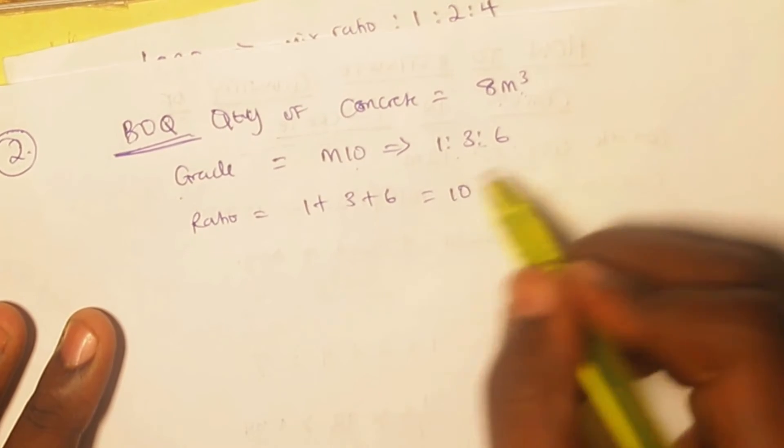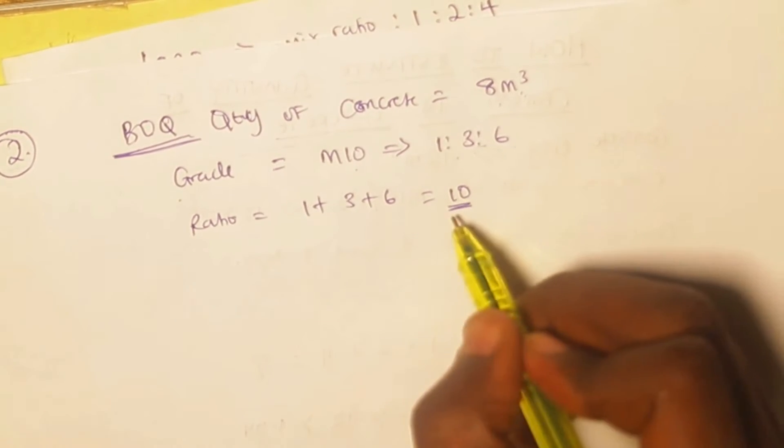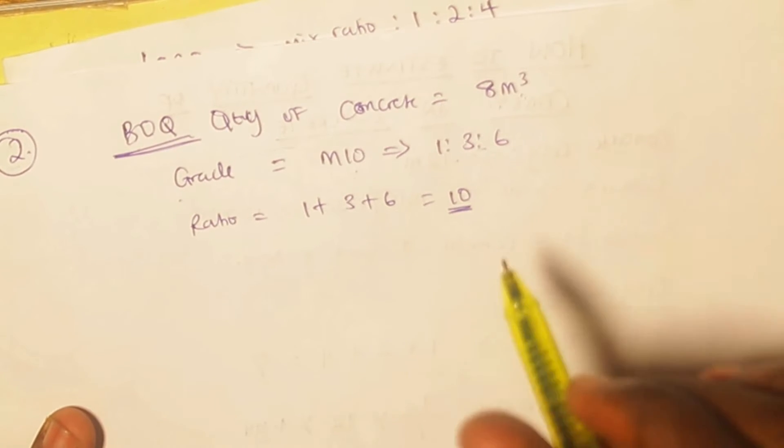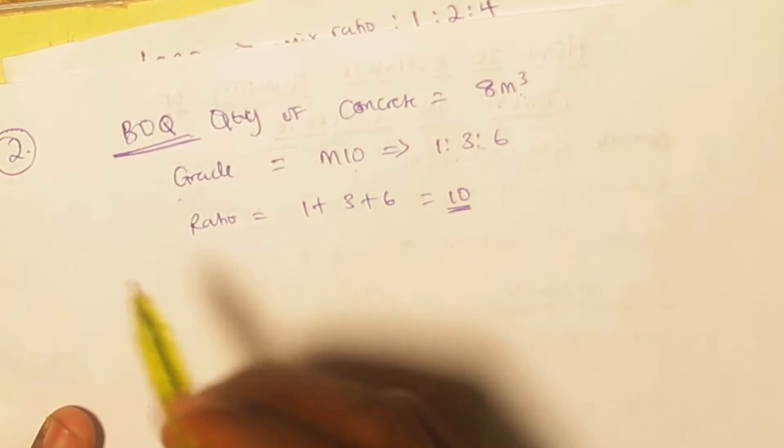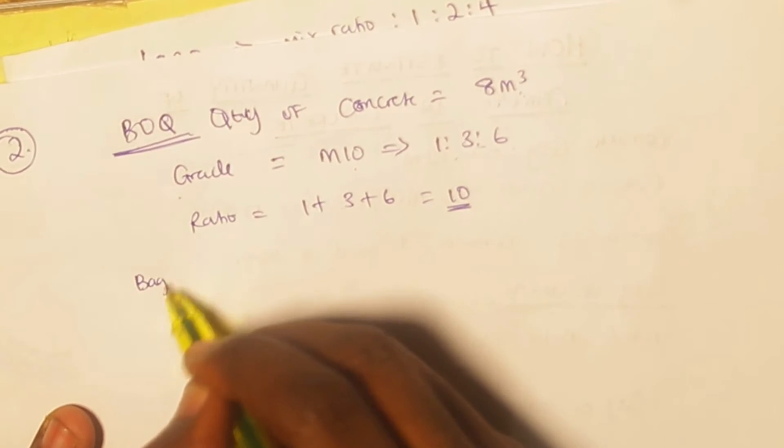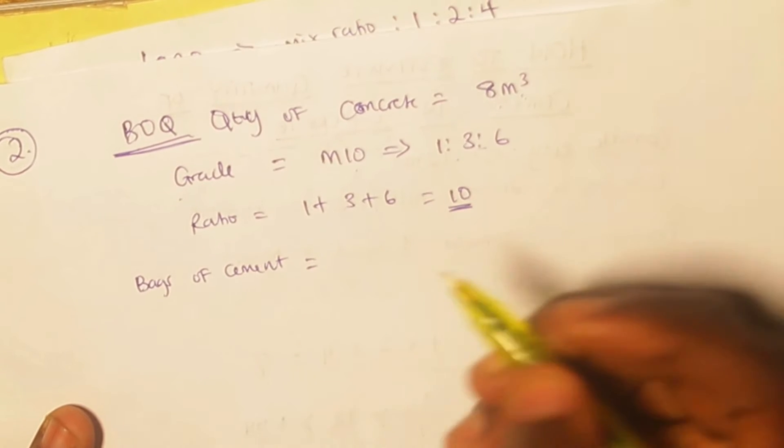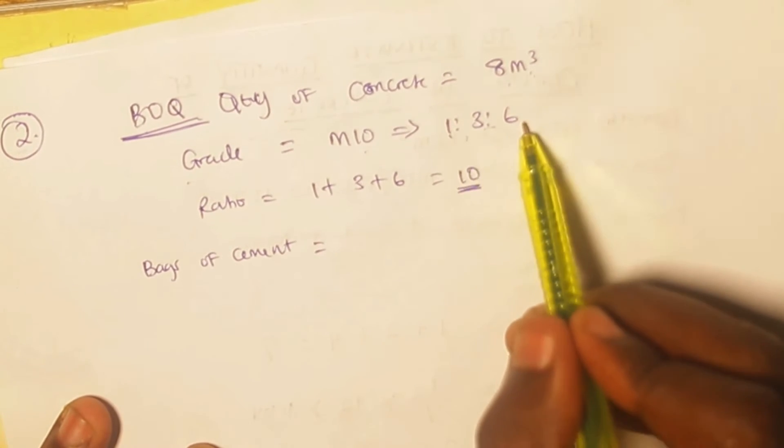The first thing is to get our ratio, and the ratio is simply going to be one plus three plus six, which is equal to ten. So this is our total ratio. Now that I know my total ratio, the next thing to do is I can do my direct calculation from what I've explained all together.